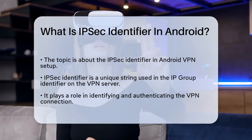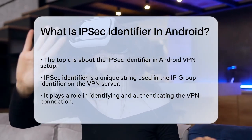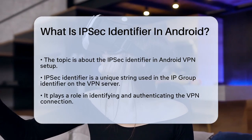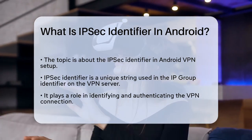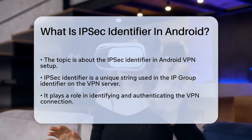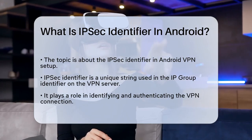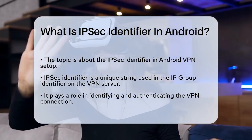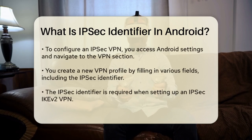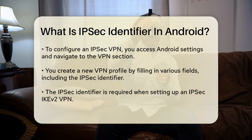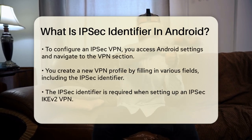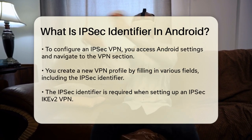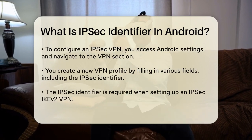When you're configuring an IPSec VPN, you need to enter several details to ensure your connection is secure and works properly. One of these details is the IPSec Identifier. The IPSec Identifier is essentially a unique string that is used as part of the IP group identifier on the VPN server. This string helps in identifying and authenticating your VPN connection.